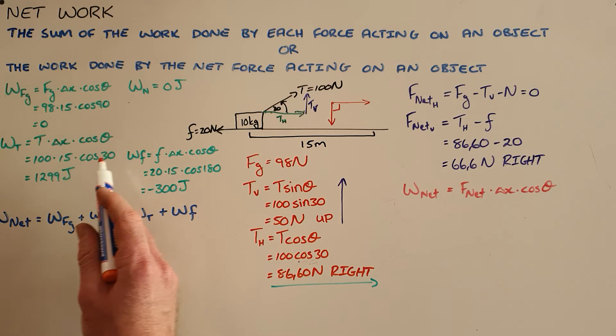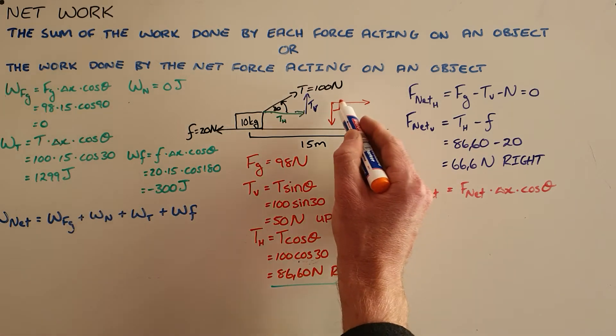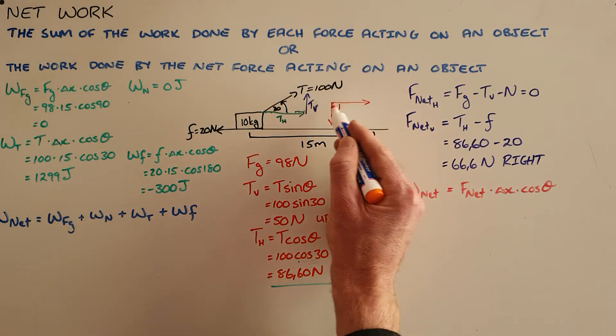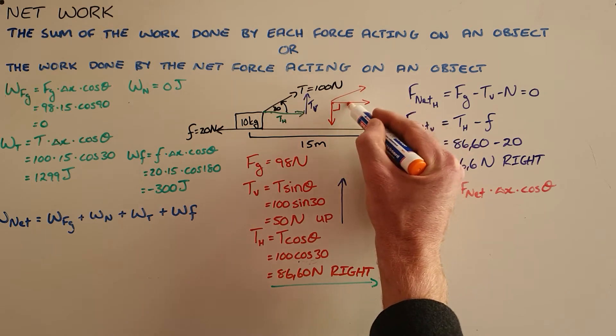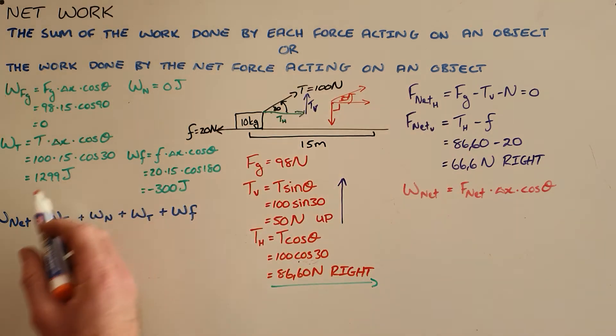The tension force we can calculate the work done by realizing that the displacement is to the right and the angle between the two is 30 degrees as given there. We can calculate the work done by the tension force is 1299 joules.